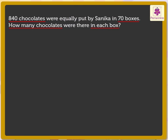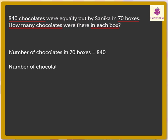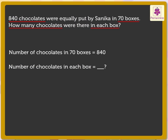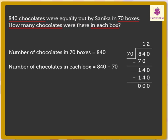We write the statements as: the number of chocolates in 70 boxes is equal to 840. Number of chocolates in each box is how many? Now, to find out the number of chocolates in each box, we divide the total number of chocolates, 840, with the total number of boxes, 70. Let us divide. Here, we get the answer as 12. Thus, there were 12 chocolates in each box.